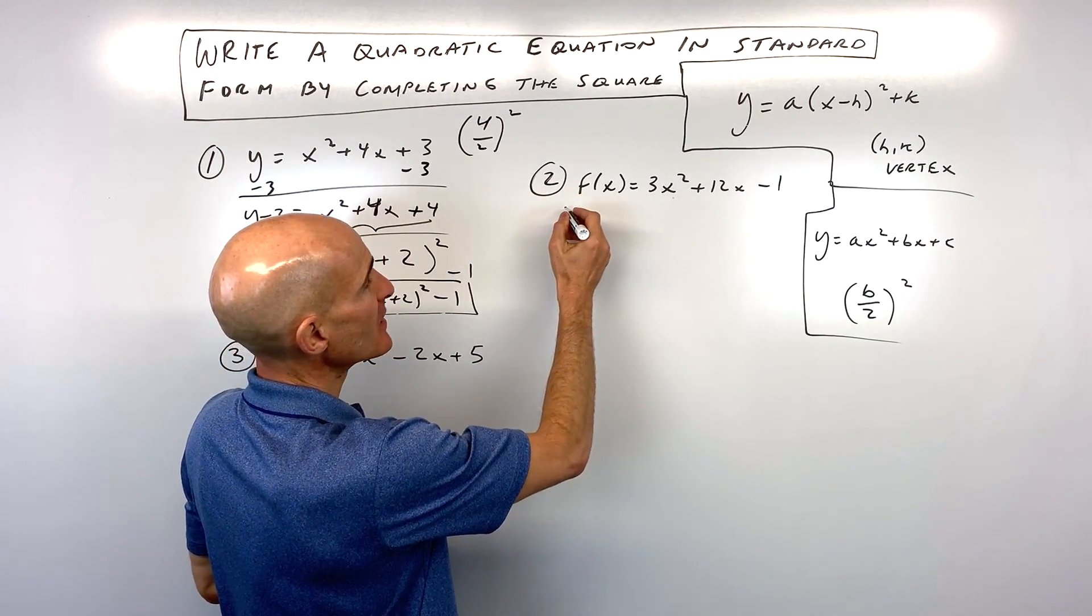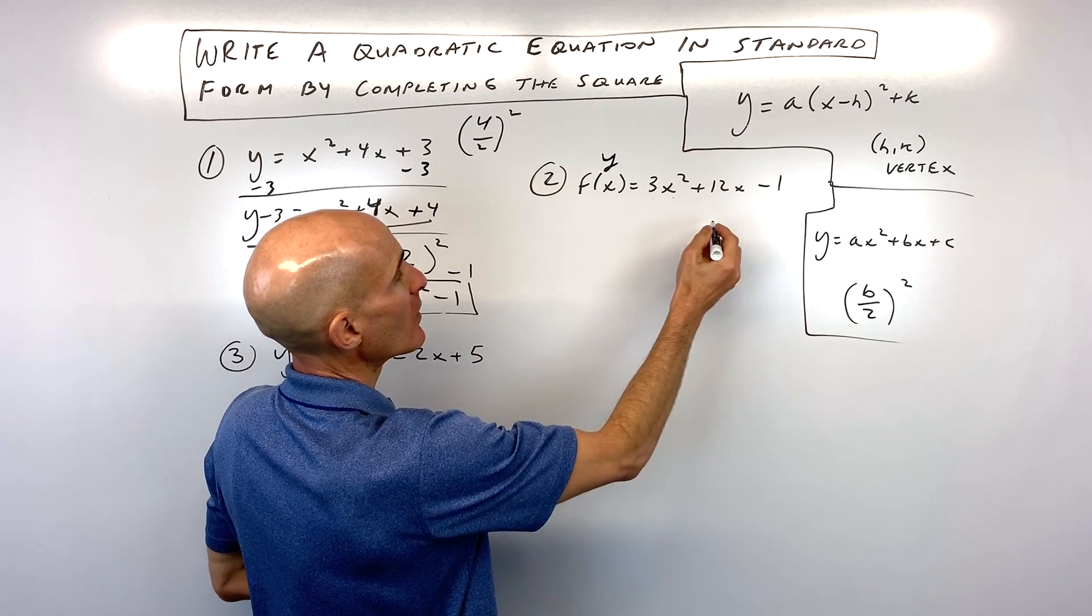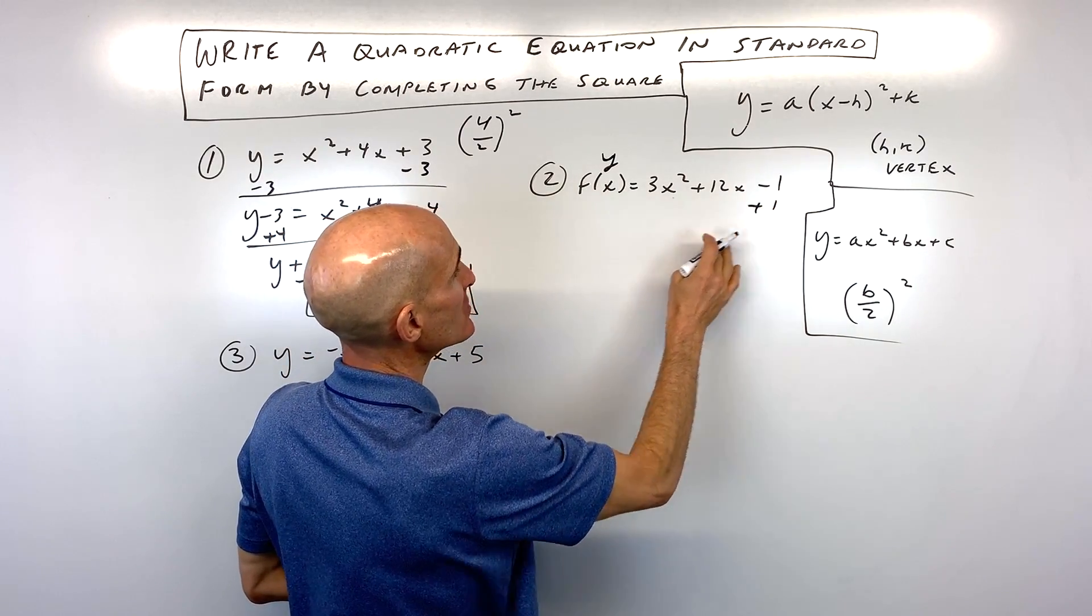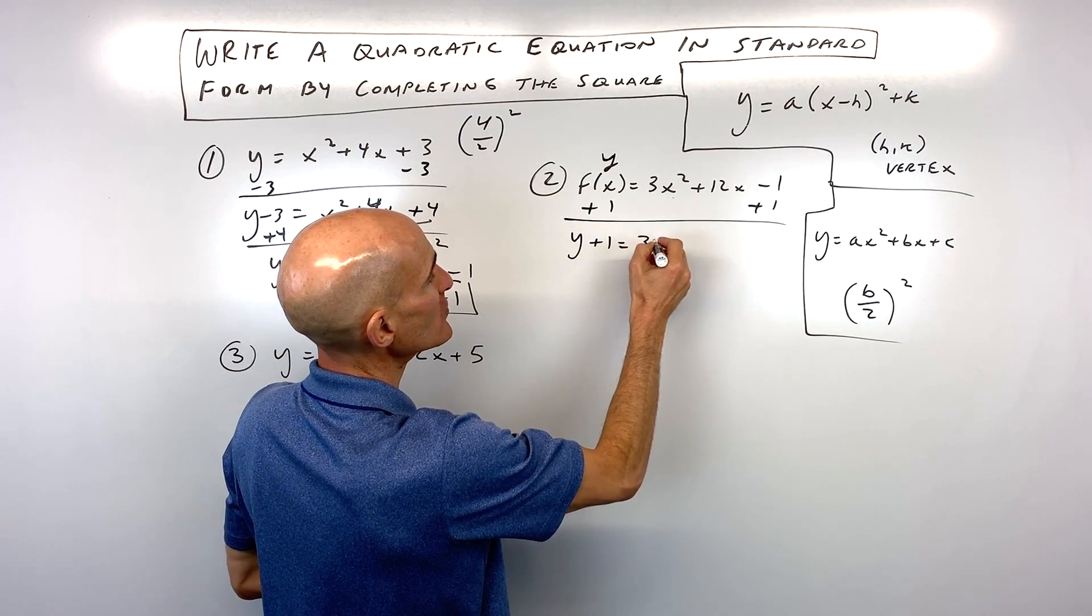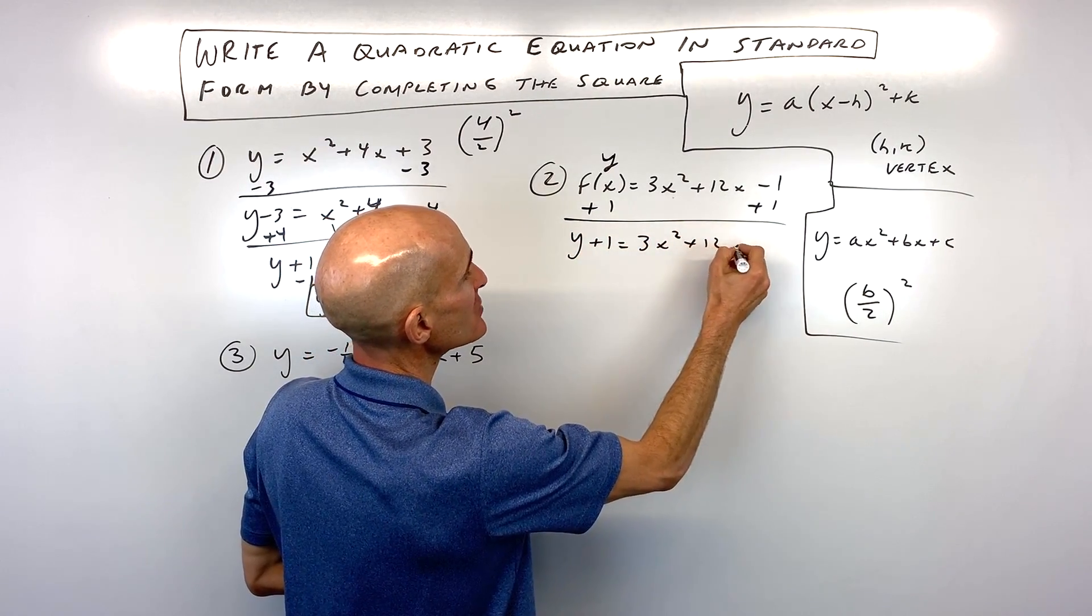What we want to do is think of f of x as like y. Okay, and what I'm going to do is I'm going to move the constant, the number, to the other side by doing the opposite, adding 1. So that gives us y plus 1 equals 3x squared plus 12x.